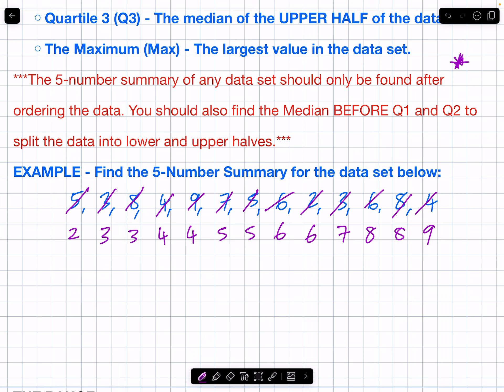Find the median. There are 13 pieces of data. The median equals the (13 + 1) ÷ 2 = 14 ÷ 2 = 7th data value. So the seventh data value is the median.